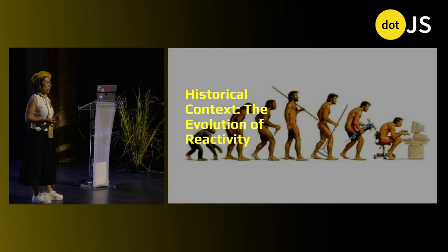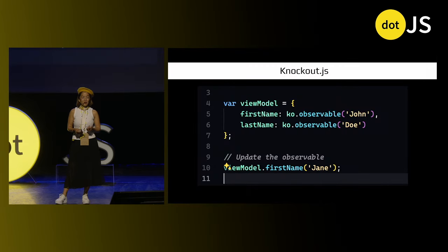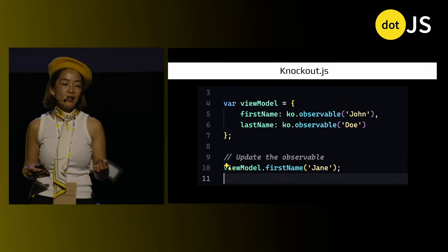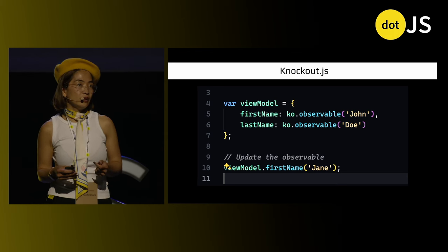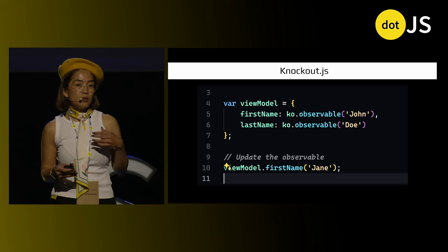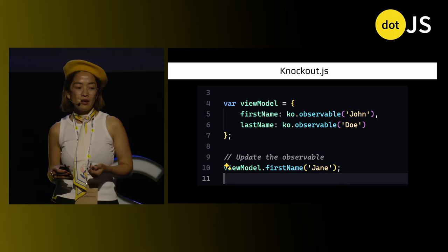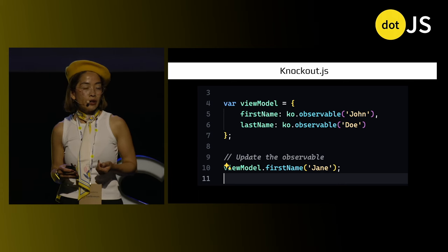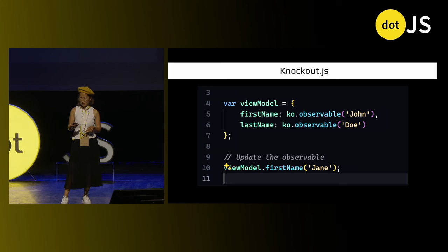To understand the power of signals, let's take a brief journey back in time and the evolution of reactivity. The early JavaScript frameworks like Knockout.js introduced observables and two-way data binding that paved the way for reactive programming. In the early 2010s, it was one of the first to introduce this reactive approach with its MVVM architecture and observables. Suddenly, our data could drive our UI updates, but it was just the beginning.